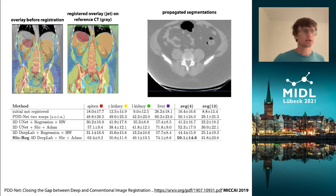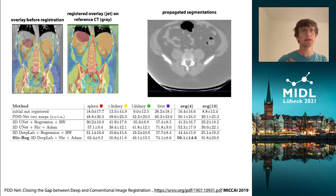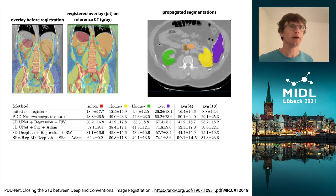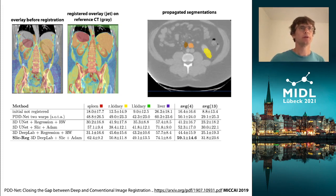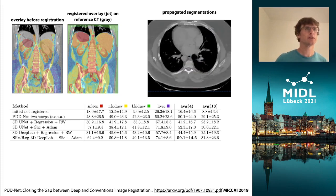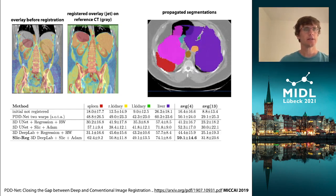We evaluated our approach on a challenging dataset of abdominal CT scans from different patients. As you can already see from these overlays before registration, there are quite complex large deformations that have been very well recovered using our new algorithm. We can also evaluate this more quantitatively by applying the warp to expert segmentations and measuring the overlap on other images, and from this visual fly-through we can see that it has very good quality.